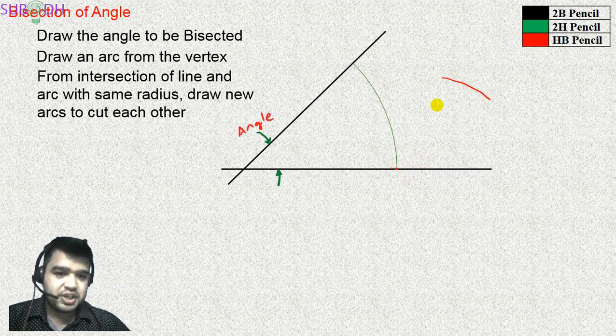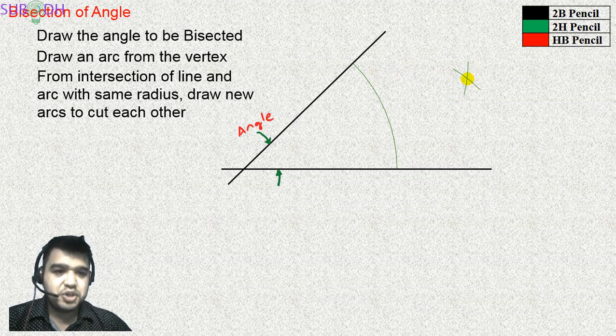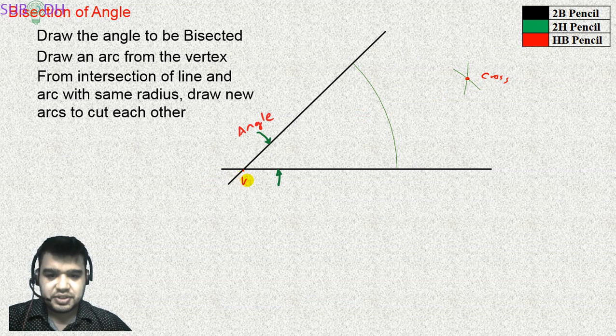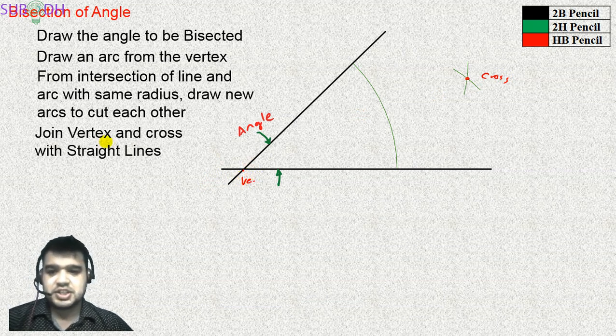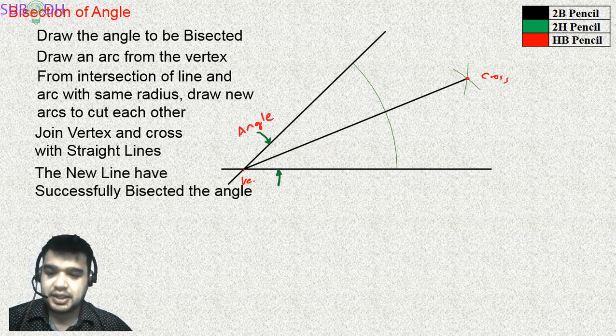Change the compass position. Once again, we will draw an arc. Once again, we will draw another arc. We will have successfully bisected the angle.